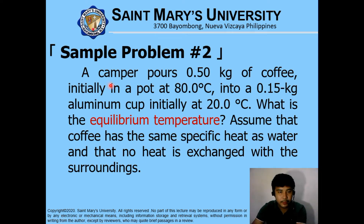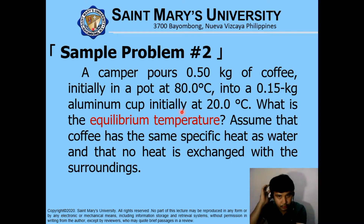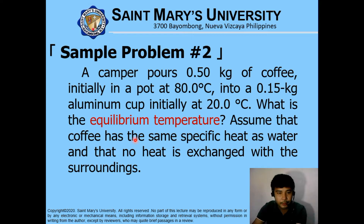For example: a camper pours 0.5 kg of coffee initially in a pot at 80 degrees Celsius into a 0.15 kg aluminum cup initially at 20 degrees Celsius. What is the equilibrium temperature? Assume that the coffee has the same specific heat as water and that no heat is exchanged with the surroundings. This entails the concept of the energy conservation principle, and we are to use the specific heat concepts.